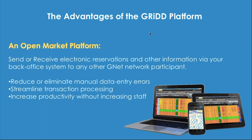Transactions become faster. You're able to handle more business, build your own networks if you're a network provider, and have more access if you're inbound from a network. The bottom line is you're going to increase productivity and you're not going to have to add staff. You can send or receive electronic reservations and other information via your back office system to any other G-Net network participant. If you're on LiveryCoach and your affiliate is on FastTrack, it's one click. There is no email, no accept-receive. This also works for pre-existing reservations the way we currently handle affiliate business.